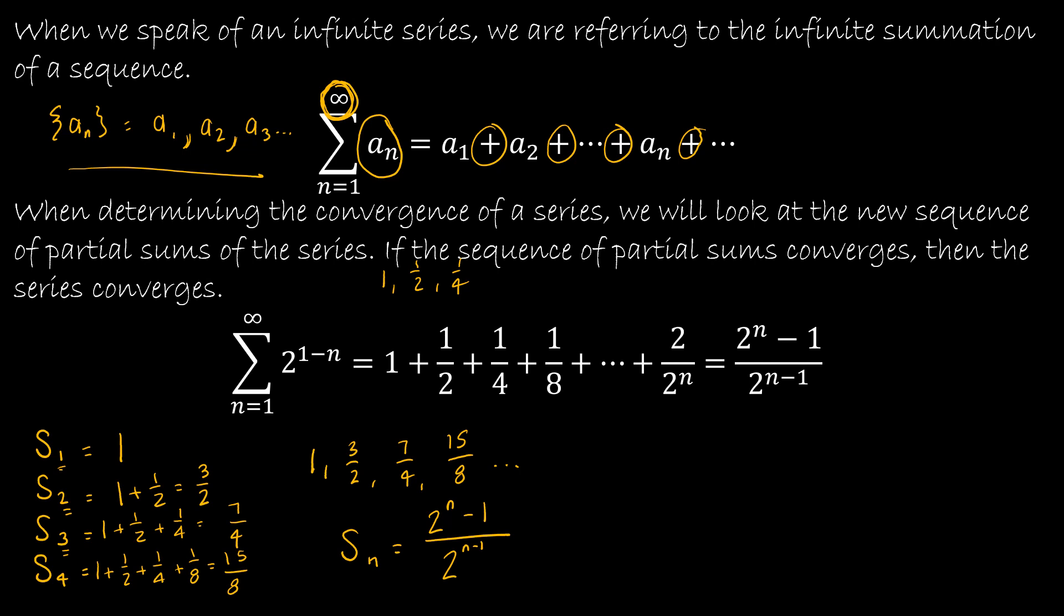Feel free to check my work. Let's say I want S sub 4, which I've already determined is 15 eighths. If I take 2 to the 4th minus 1 over 2 to the 4 minus 1, that gives me 2 to the 4th, which is 16 minus 1, which is 15. And then 2 to the 4 minus 1 is 2 to the 3rd, which is 8. So I feel pretty good about this function.